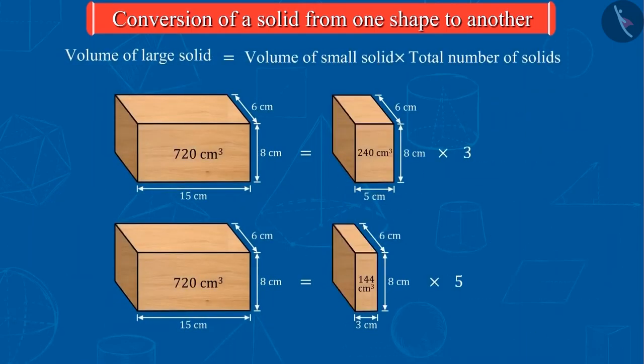So, we can say that if a solid is converted into a smaller solid of equal measure, then the product of volume of the small solids and the total number of small solids is equal to the volume of the larger solid.